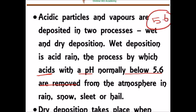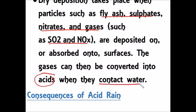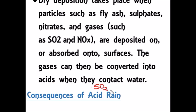Dry deposition takes place when particles such as fly ash, sulfates, nitrates, and gases are deposited on the surface of the earth. These gases can be converted into acid when they contact with water. Sulfur dioxide when combined with water produces sulfuric acid; nitrogen dioxide when it contacts water gives nitric acid.